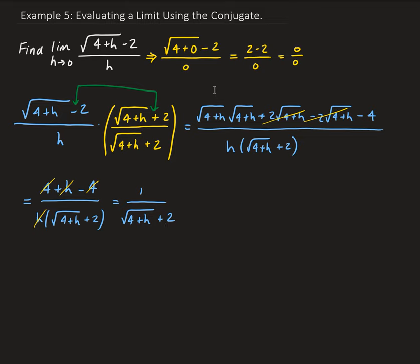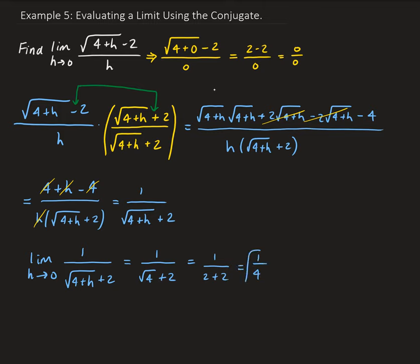From here, we're pretty much done. We just need to take the limit of our simplified function: 1 over square root of 4 plus h plus 2. Doing a direct substitution, letting h approach 0, we get square root of 4 plus 2, which gives us 1 over 2 plus 2 — so the answer is 1 fourth. This is how we use the conjugate: make sure the sign values are different, cancel out the h, and then do a direct substitution to get the limit.